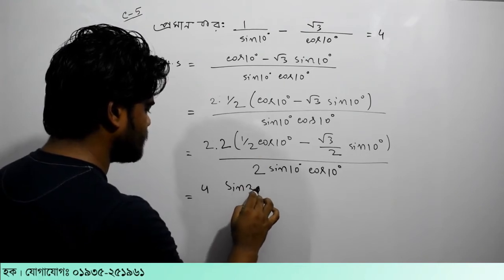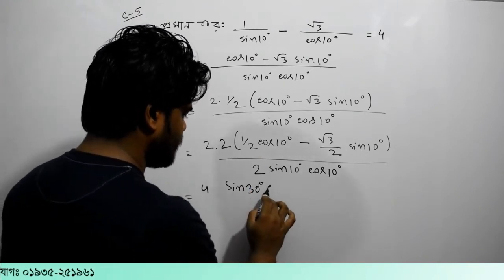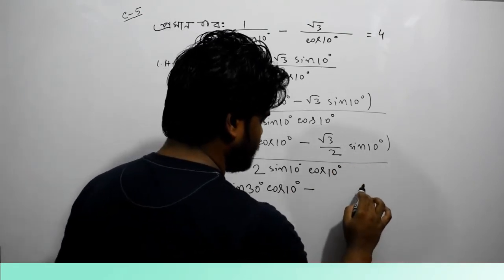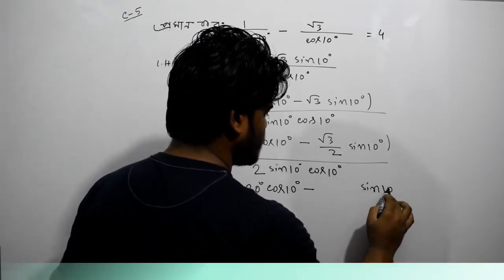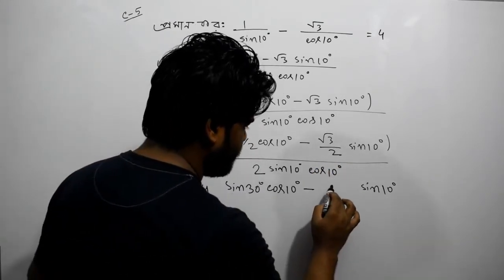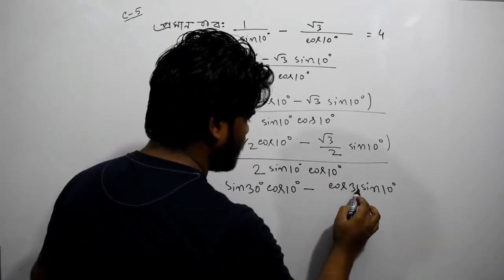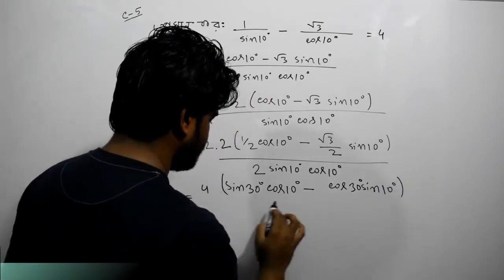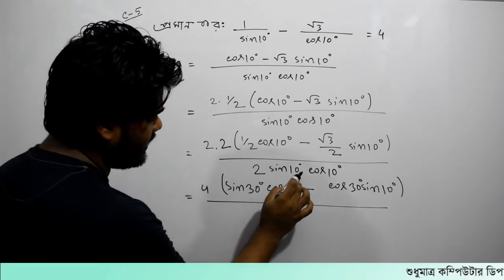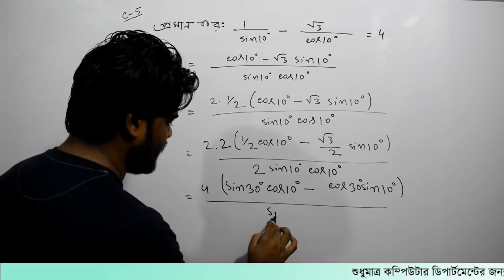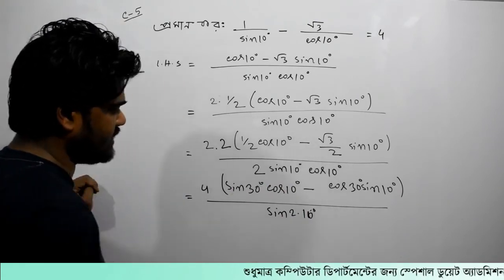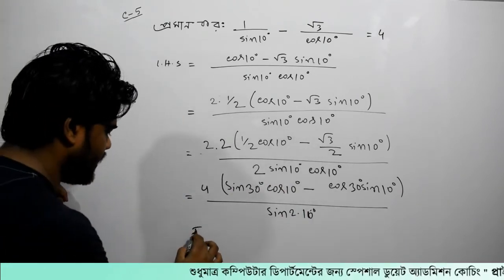This is sin 30 degree. This is cos 10 degree minus sin, sin 10 degree. Cos 30 degree means root 3 by 2. This is divided by. This is sin 2a.